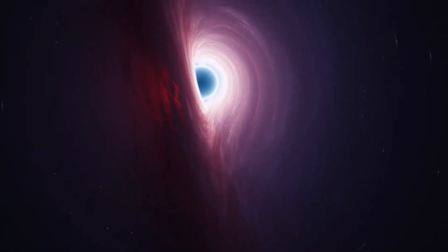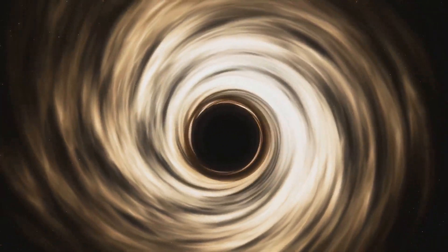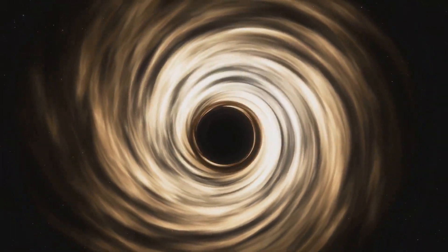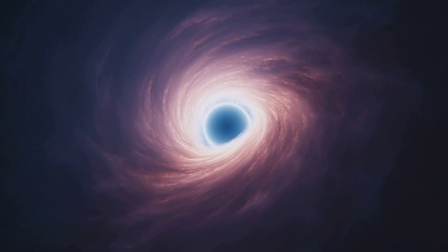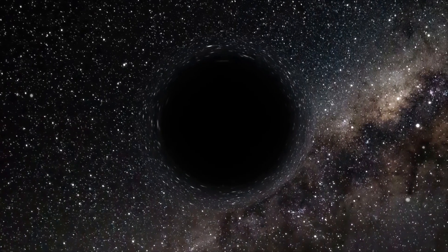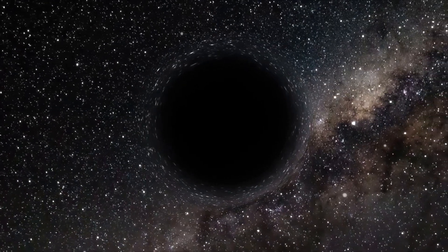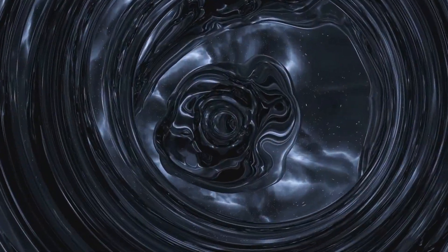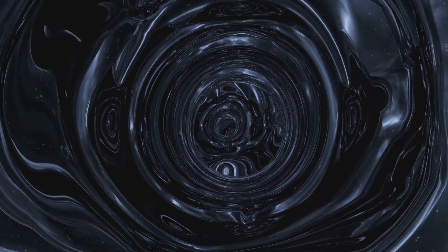Black holes come in many different sizes. From the smallest primordial black holes that may have formed right after the Big Bang, to the supermassive black holes that anchor galaxies. There could be hundreds of millions of black holes in our Milky Way alone, most of them hidden and detectable only by their gravitational effects.